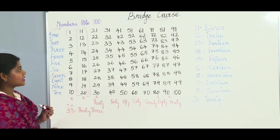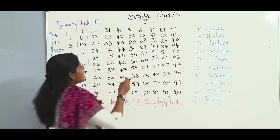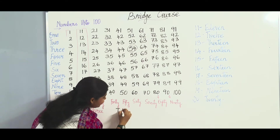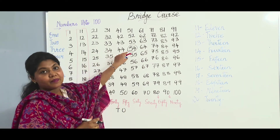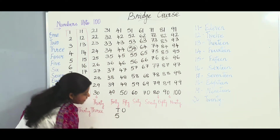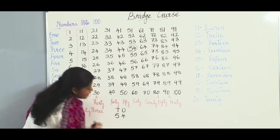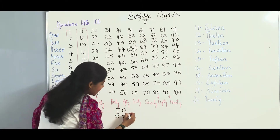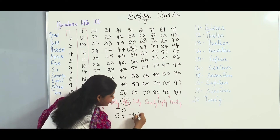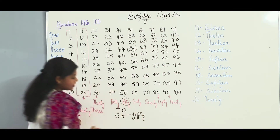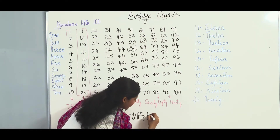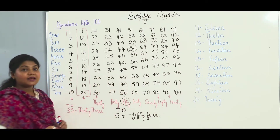Let us take one more example: 54. So 54 means 5 tens make 50 and 4 ones make 4. The 5 is written in the 10's place and 4 in the 1's place. So we write F-I-F-T-Y for 50, and we already know the spelling of 4: F-O-U-R. So it is fifty-four, 54.